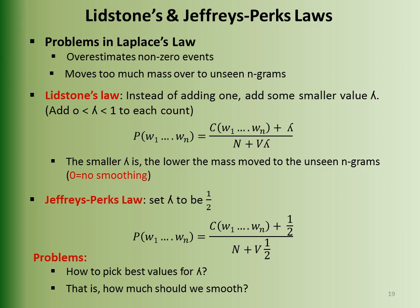A variation is Lidstone and Jeffreys-Perks Law, where instead of adding 1, we add a small value lambda. Lambda lies between 0 and 1 and the equation adjusts accordingly. Jeffreys-Perks Law sets lambda to 0.5. The problem here is how to pick the best value of lambda — that is, how much should we smooth.